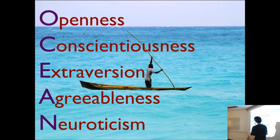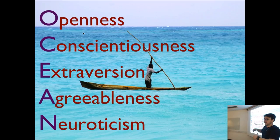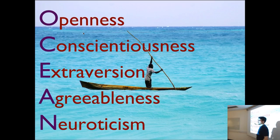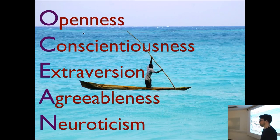The five-factor model is a fairly accepted model for personality, as much as anything is accepted in psychology. As computer scientists interested in people using computer systems, we can give people a test and get five numbers to classify them — then say 'all you people with low values of this, where have you gone?' The five factors are Openness, Conscientiousness, Extroversion, Agreeableness, and Neuroticism — sometimes called OCEAN, sometimes CANOE, hence my clever slide.